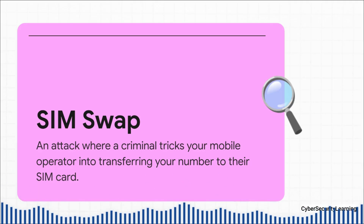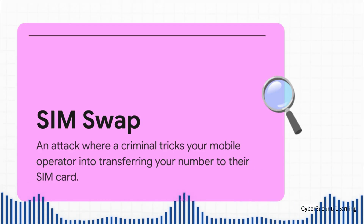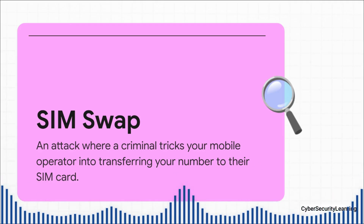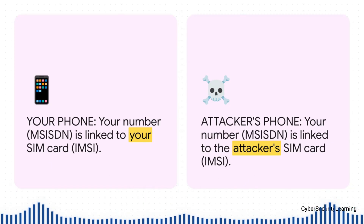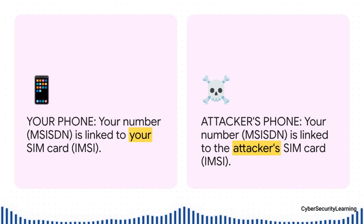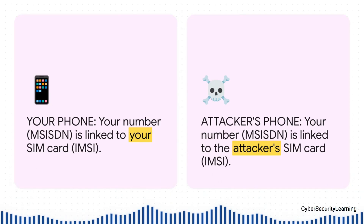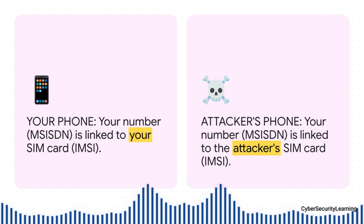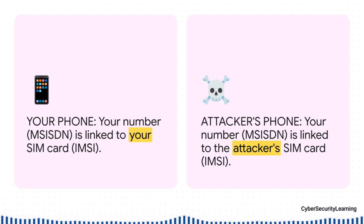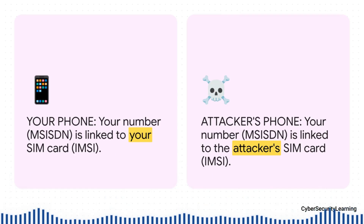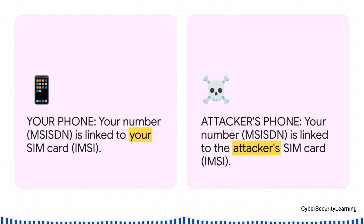Notice what they don't need: they don't need your phone, they don't need any malware, they don't even have to be in the same country as you. All they need is a good story. Your phone number — technically called an MSISDN — is basically just an address that points to the unique ID of your physical SIM card, the IMSI. A SIM swap tricks the phone company into changing that address, erasing the link to your SIM and pointing to theirs. Your phone goes dead and theirs lights up with your number.